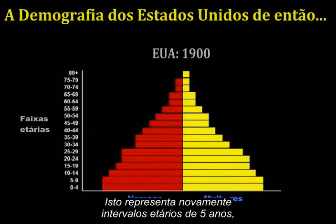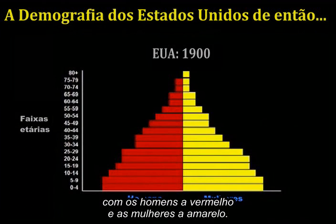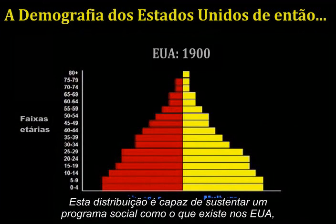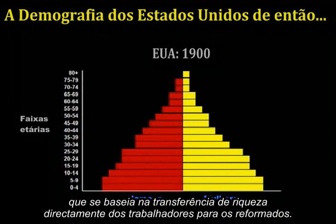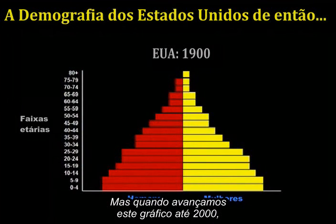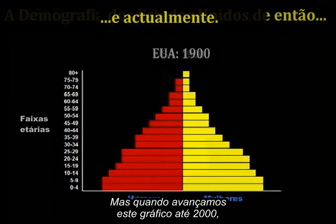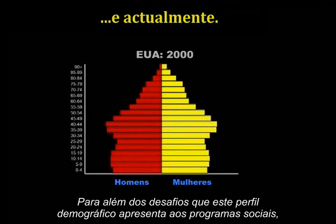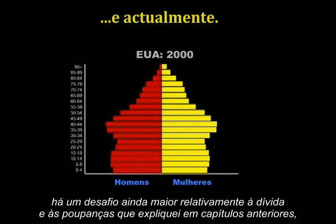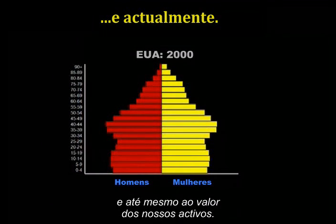This pyramid distribution is capable of supporting an entitlement program like the one in the U.S. that is based on transferring wealth directly from workers to retirees. But when we cast this chart forward to 2000, the baby boomer bulge is quite apparent. Besides the challenge this demographic profile offers to the entitlement programs, an even larger challenge is presented to both the debt and savings issues, and even to the value of our assets.